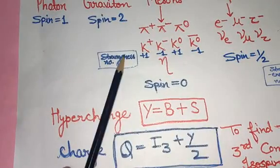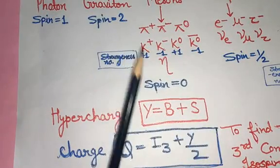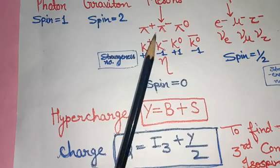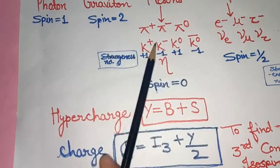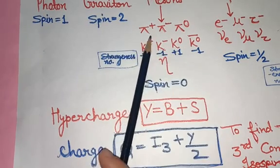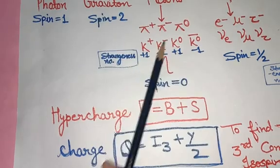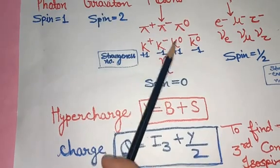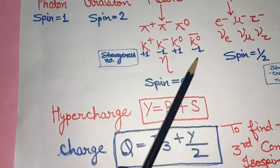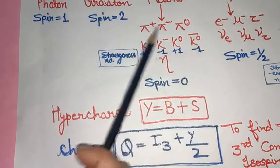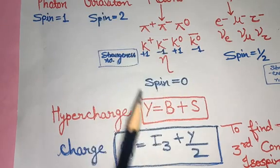Next are kaons, which are also strange particles — their strangeness number exists. K-positive has strangeness +1, K-negative is −1, K-naught is +1, and K-naught-bar is −1. These are the strangeness numbers for all the kaons.